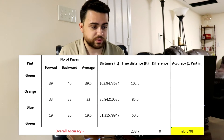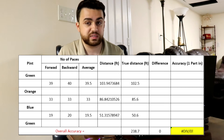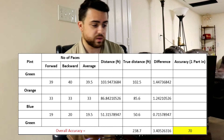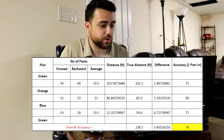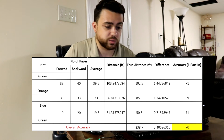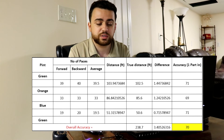Here are the true distances measured with the tape to the nearest tenth of a foot: green to orange was 102.5 feet, orange to blue was 85.6 feet, and blue to green was 50.6 feet. Taking the difference between the true measured and the paced calculated distances: green to orange had a difference of 1.45 feet, orange to blue had a difference of 1.24 feet, and blue to green had a difference of just 0.16 feet — pretty good. Using those differences, we calculate accuracy as true distance divided by the difference: green to orange is one part in 71, orange to blue is one part in 69, and blue to green is one part in 71.